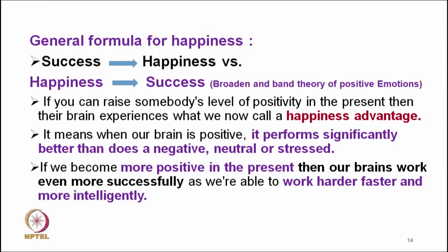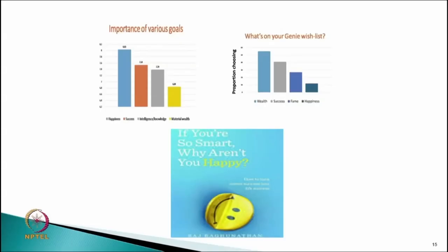If you can raise somebody's level of positivity in the present, then their brain experiences what we call a happiness advantage. It means when our brain is positive, it performs significantly better than at a negative, neutral, or stressed level. If we become more positive in the present, our brain works even more successfully, and we are able to work harder, faster, and more intelligently.